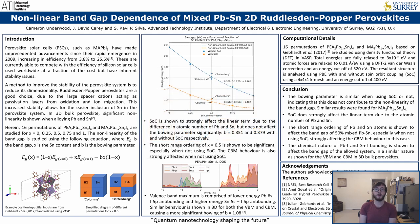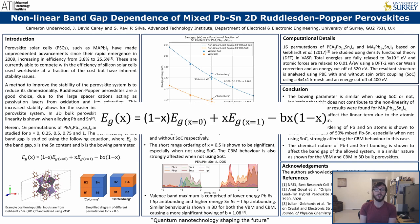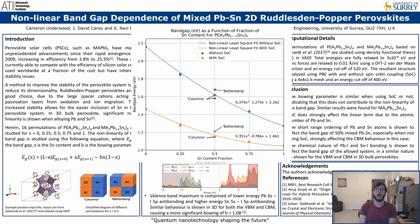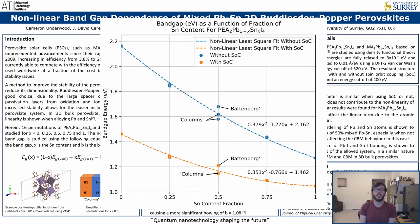The bandgap dependence can be understood using the following equation, where b is the bowing parameter. We found by using density functional theory calculations that the bandgap dependence on increasing tin content is slightly nonlinear, with a bowing parameter of 0.351 and 0.379 with and without spin-orbit coupling respectively.